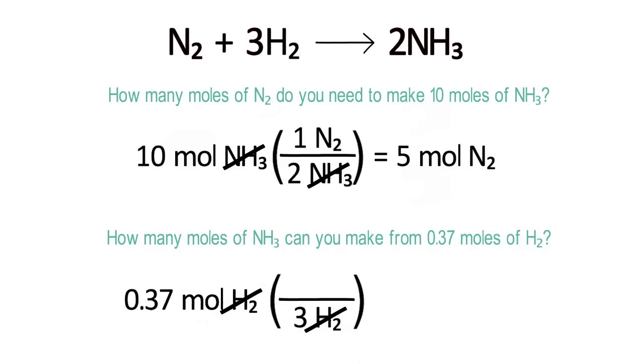Then, because we are solving for ammonia, put 2NH3 on the top. That 2NH3 also comes from the balanced reaction.